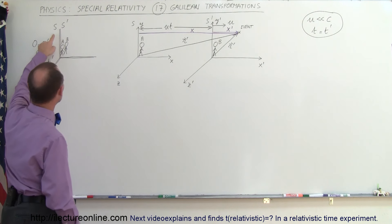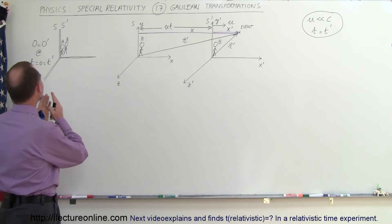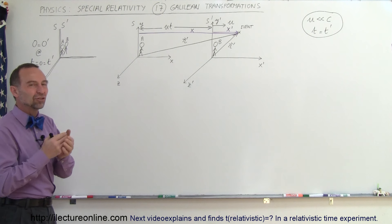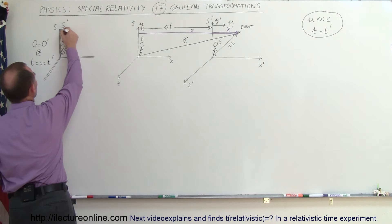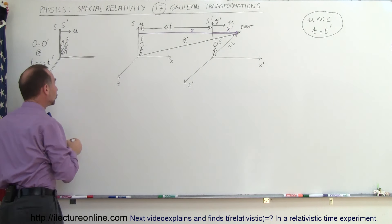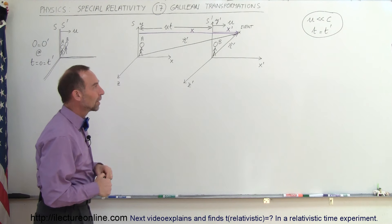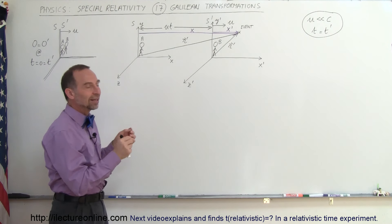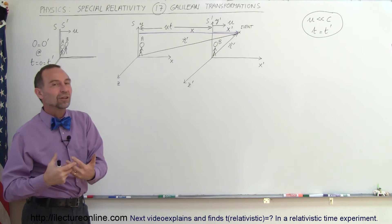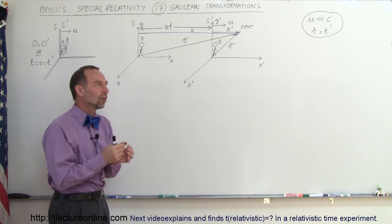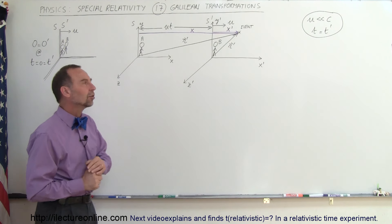We have two reference frames called S and S prime. S is the stationary reference frame, S prime is the moving reference frame, and at T equals zero the origins are at the same location. Since S prime is moving to the right at speed U, after a certain amount of time it will be quite a ways ahead of the stationary frame. As long as the velocity is very slow, you can say T equals T prime — and that is what sets Galilean transformations apart from the Lorentz transformation equations, where the two times are not equal. Time is relative and depends on the speed of the reference frame.